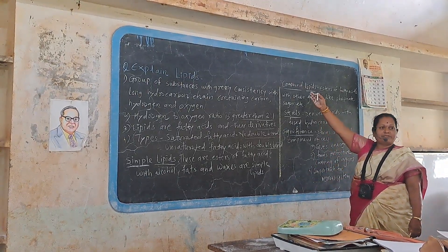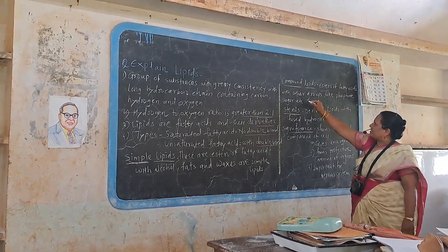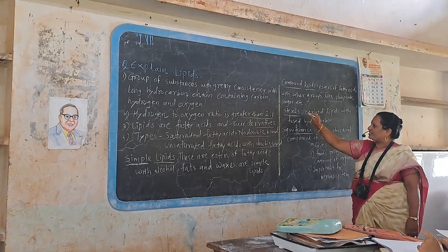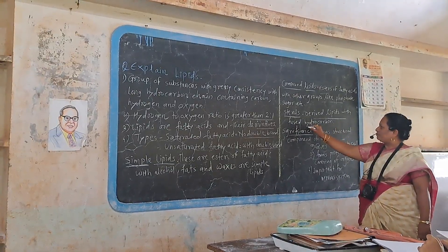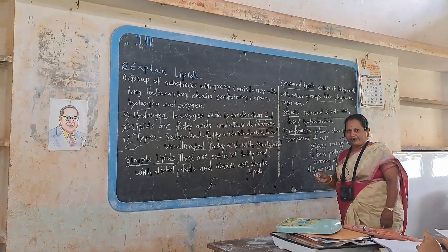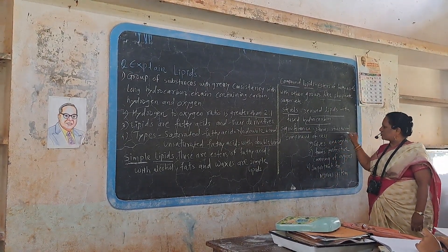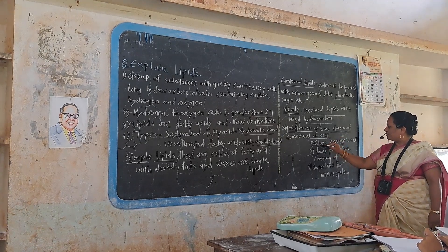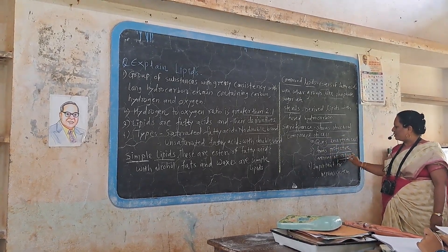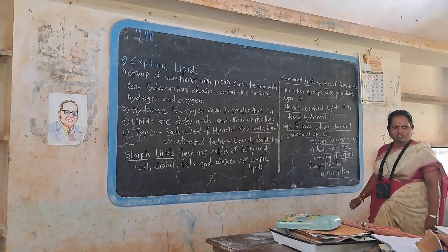Another type is compound lipid, and sterols. Esters of fatty acids with other groups like phosphate and sugar form compound lipids. Sterols are derived lipids with fused hydrocarbon. The significance of fatty acids: first, it forms the structural component of the cell; it gives energy to the cell; it forms the protective covering of organs; and it is important for the nervous system.